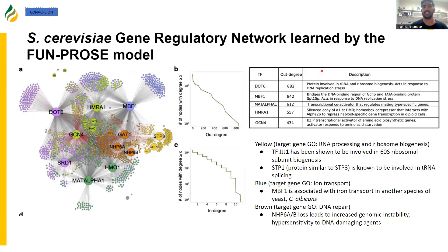The next thing we did was generate a gene-regulation network from FunPros, by looking at which transcription factors were most predictive for different target genes. This is the network we generated for Saccharomyces cerevisiae. When we look at the top five transcription factors in terms of out-degree — the number of genes that each regulates — we saw that many of the top genes are known as master regulators, in particular master regulators of stress response, which makes sense because the dataset we used for Saccharomyces cerevisiae was a stress response dataset.